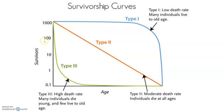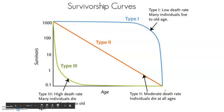Whereas type 3, we see a massive die-off at young age. We call this early loss. Not many individuals live to whatever their old age is.